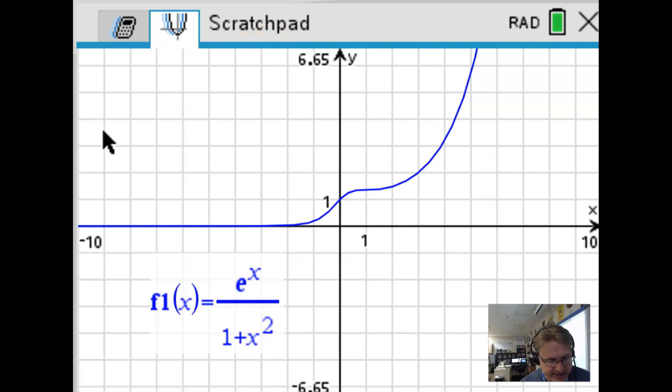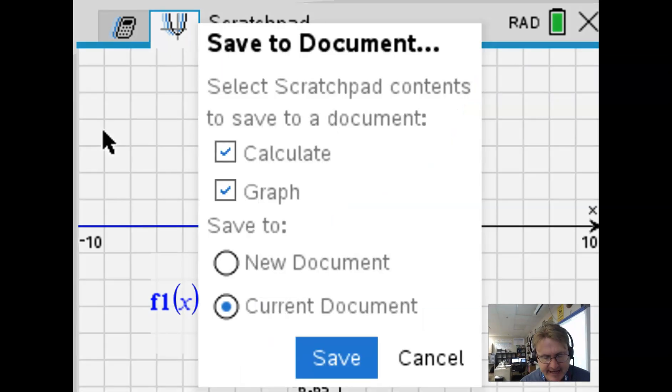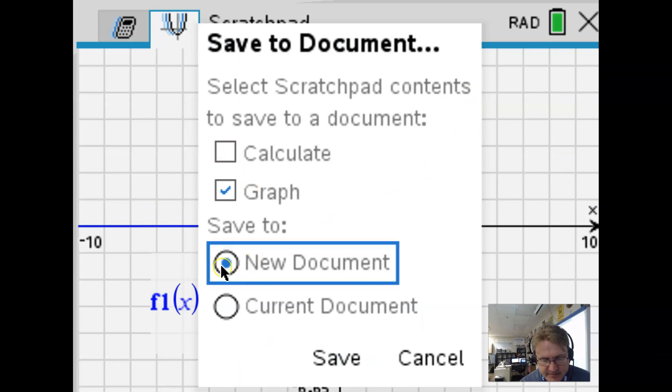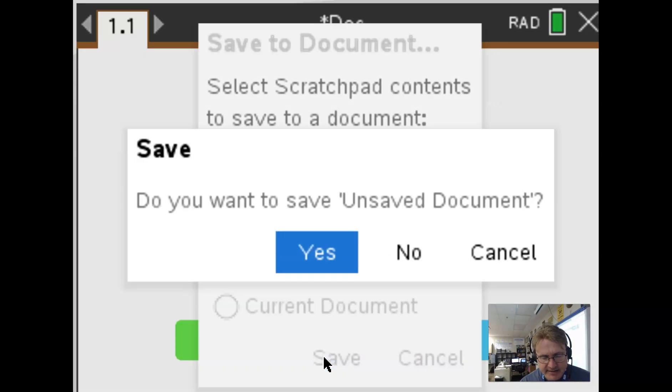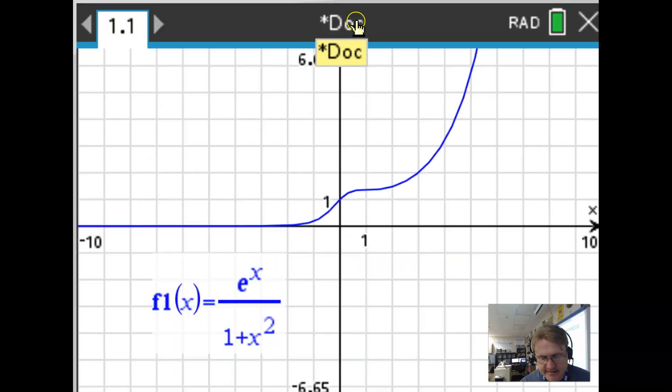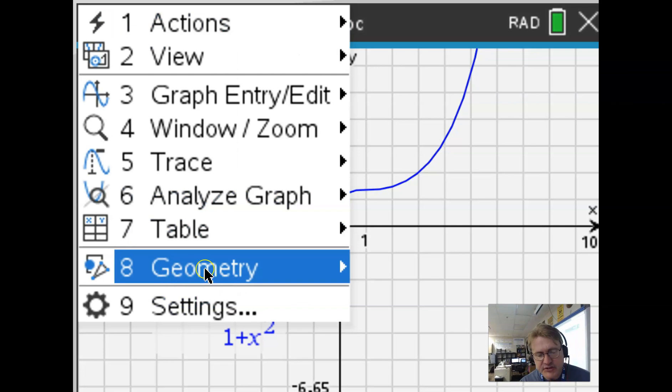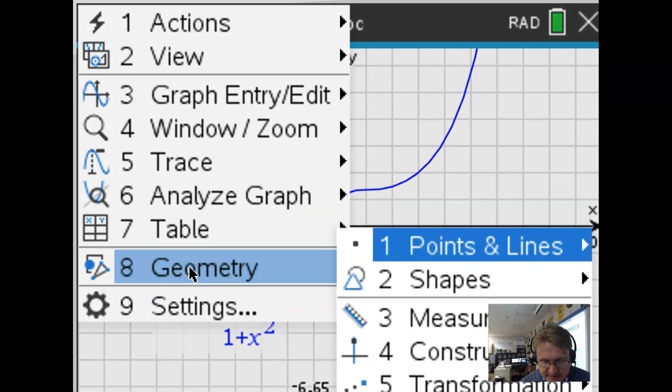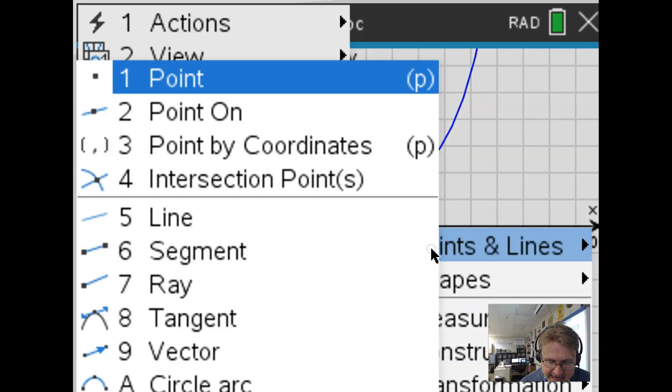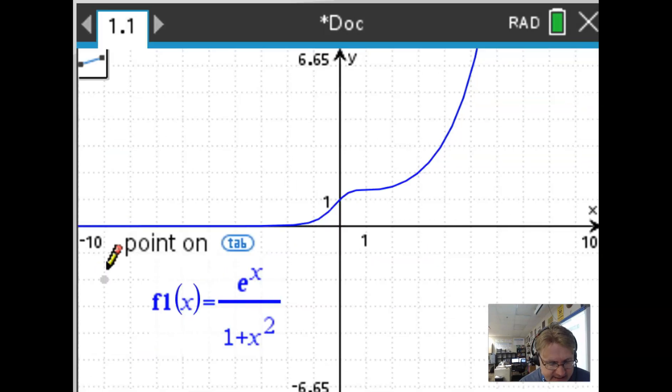But I can just easily alter that. I'm going to hit Ctrl Save, and just choose to save the graph to a new document. Now I know it's a document because it says doc up there. And this allows me to do a few other cool things like I can go into menu. And this geometry feature is now available, it wouldn't have been in a scratchpad. And I can choose point and line. Let's try that again.